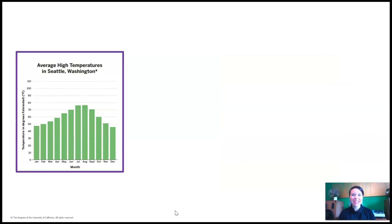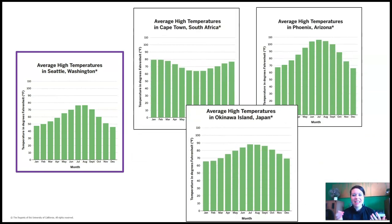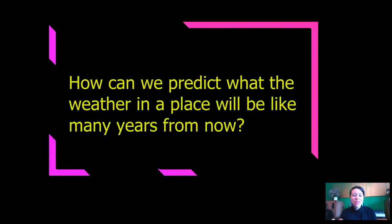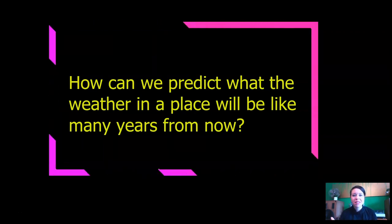Do you remember the last lesson? We compared Seattle's average temperature and precipitation to three other major cities, and we were trying to find a city that has a climate similar to Seattle's. So today we're going to study how we can predict what the weather in a place will be like many years from now, because that would be really useful to help us pick a place for our orangutan reserve.